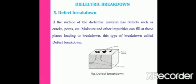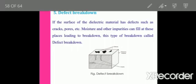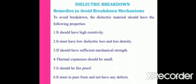The fifth type is defect breakdown. Some dielectric materials have defects such as cracks, pores, and blow holes. These vacant positions may contain impurities which lead to breakdown, called defect breakdown.